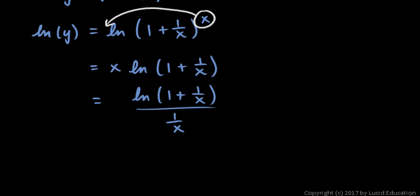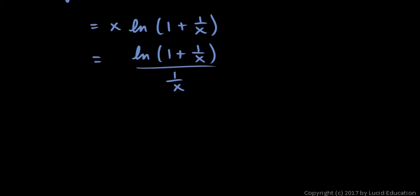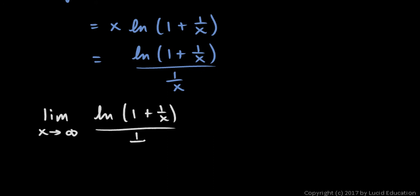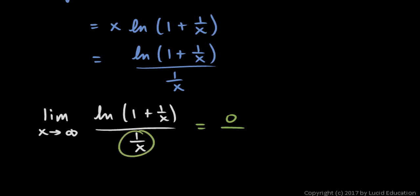The goal now is to find the limit as x approaches infinity of the natural log of 1 plus 1 over x over 1 over x. We can't evaluate this by substitution because as x approaches infinity, 1 over x becomes infinitely small, and we're left with the natural log of 1, which is 0. And 1 over x in the denominator also becomes 0. So this is 0 over 0, but we can evaluate this limit using L'Hôpital's rule.